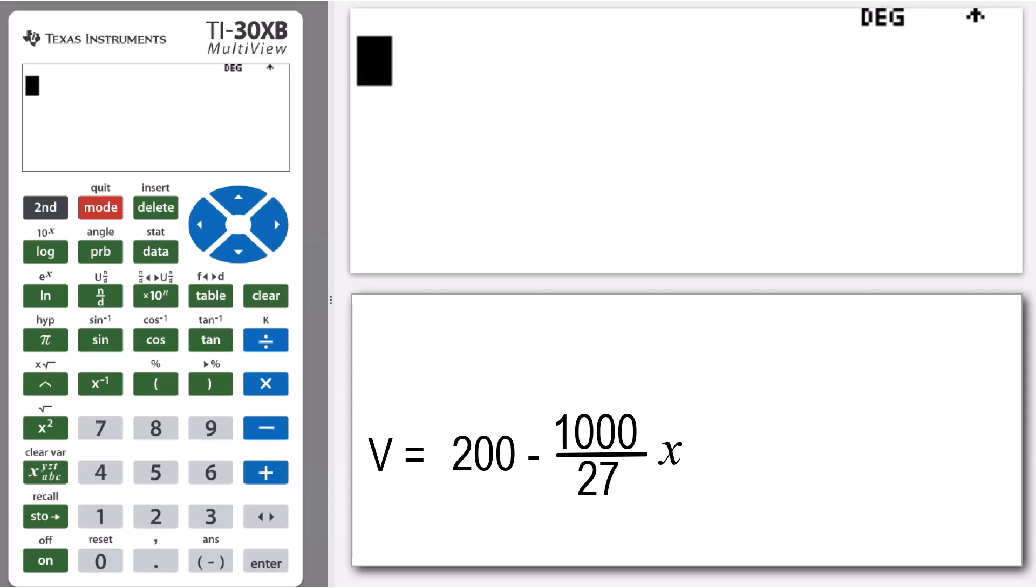Now the first thing I'm going to do is go into my function table and then I can input the equation that I'm interested in. So I'm going to press that table button there, just next to the clear.